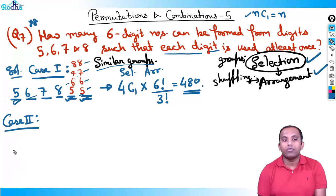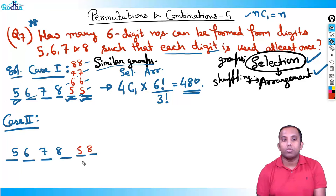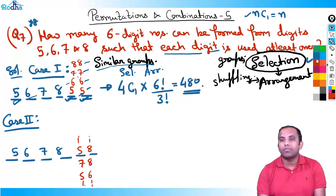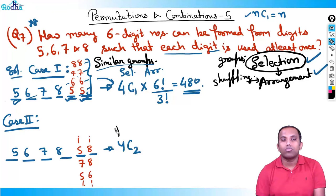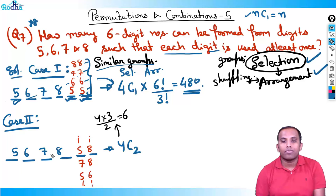Case two: these two remaining digits are different — it could be five and eight, seven and eight, five and six, and so on. How many groups can I form? Out of four digits, selecting two different digits: four C two groups. Four C two equals four times three divided by two, which is six. So six groups: five-eight, five-six, five-seven, six-eight, seven-eight, six-seven. All six groups are similar.